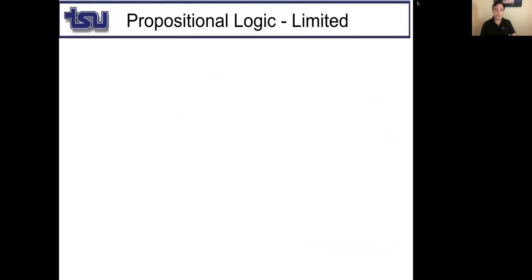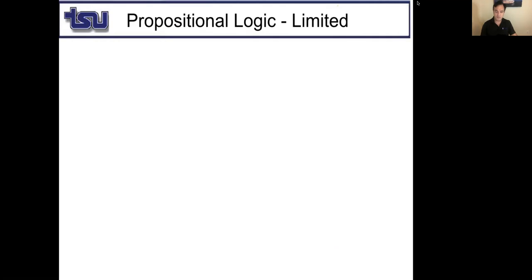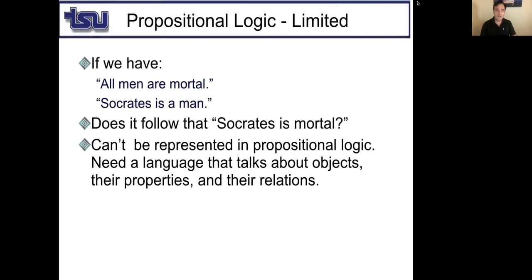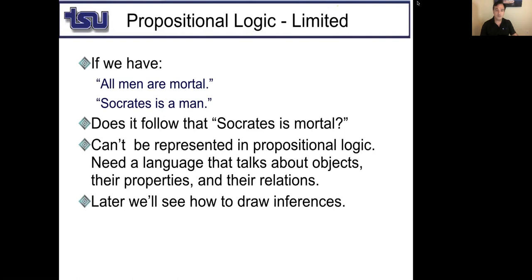Propositional logic is actually limited. For example, think about this: we have two propositions — 'All men are mortal' and 'Socrates is a man.' Can we conclude that Socrates is mortal? Apparently we cannot. Propositional logic representation will not be enough for us to draw conclusions. We will need a language that talks about objects, their properties, and their relations, and then use that to draw inferences.